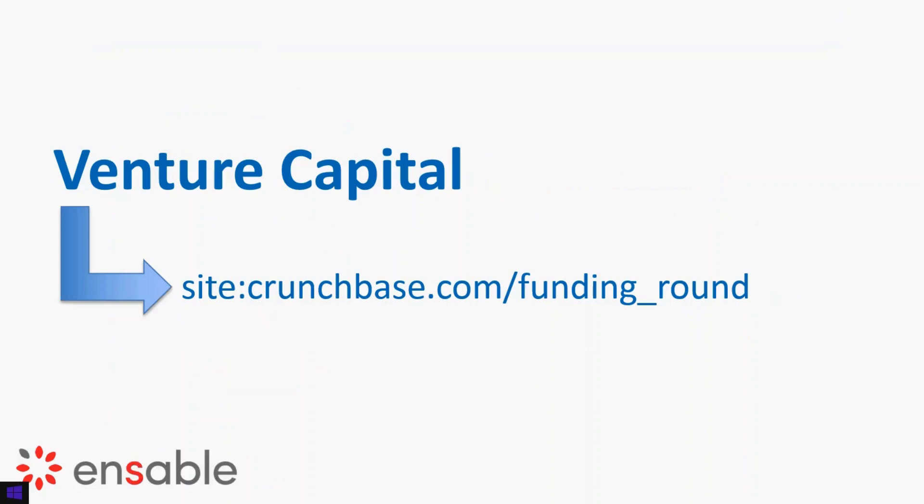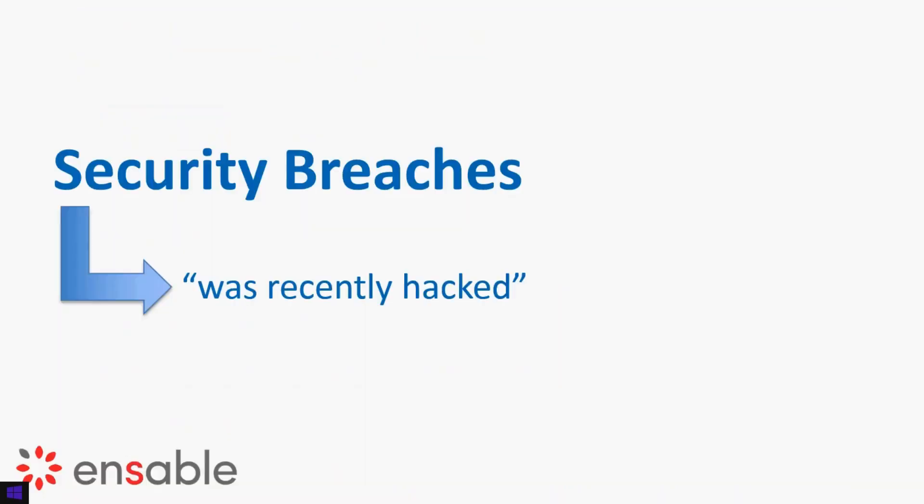Another great way to look at changes is through venture capital. Venture capital will definitely indicate a big change, and you get this early on in the process. Go to site:crunchbase.com/funding_round. This is a little general so it's not going to give you everything, but it will give you data points you can run with. When you set this up, it's going to notify you about changes related to companies who are receiving funding — which is always very helpful because they have money to spend.